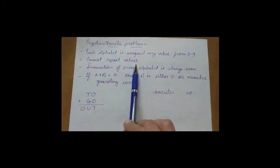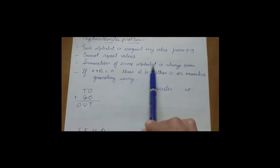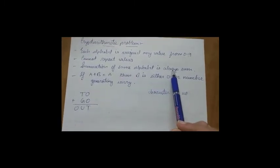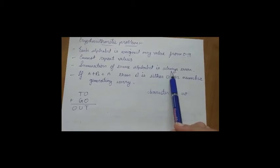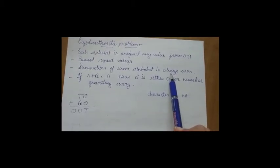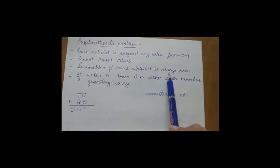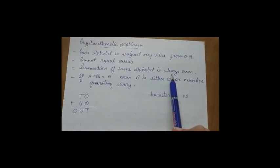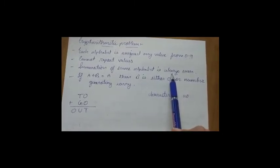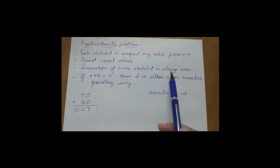The third rule is summation of same alphabet is always even. This is a simple mathematical rule - if odd numbers are summed, the result is even, and if even numbers are summed, the result is also even. For example, 6 plus 6 equals 12, and 3 plus 3 equals 6.